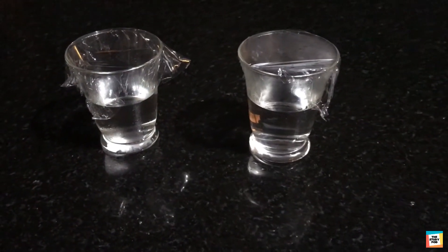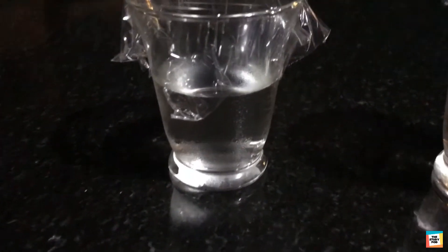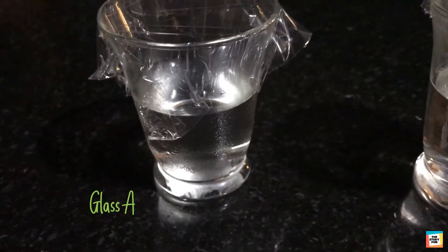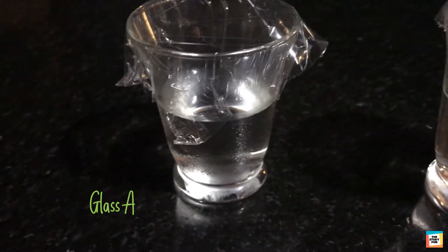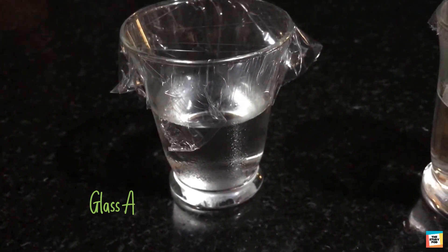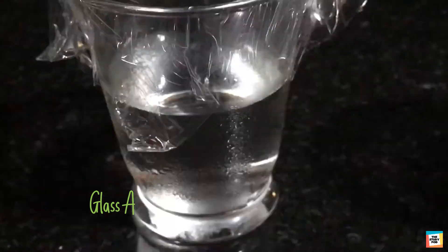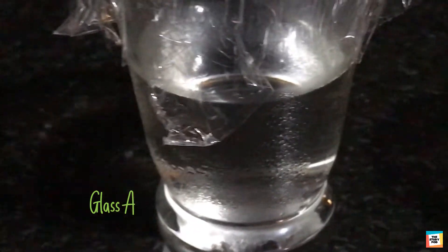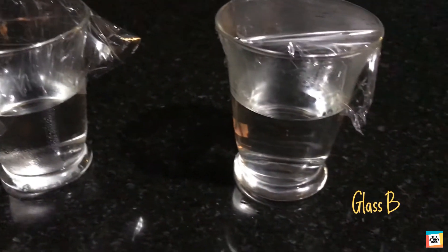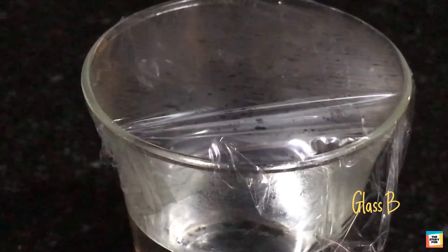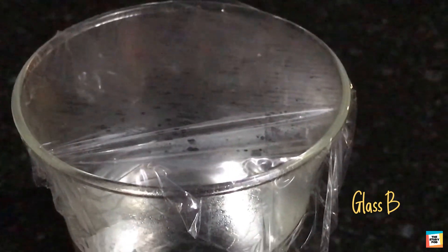Now let's observe both the glasses carefully. We can see that little droplets of water have appeared on the outside of glass A and its cling wrap is clear. While the cling wrap of glass B is fogged and small droplets of water have appeared on the inside of it.